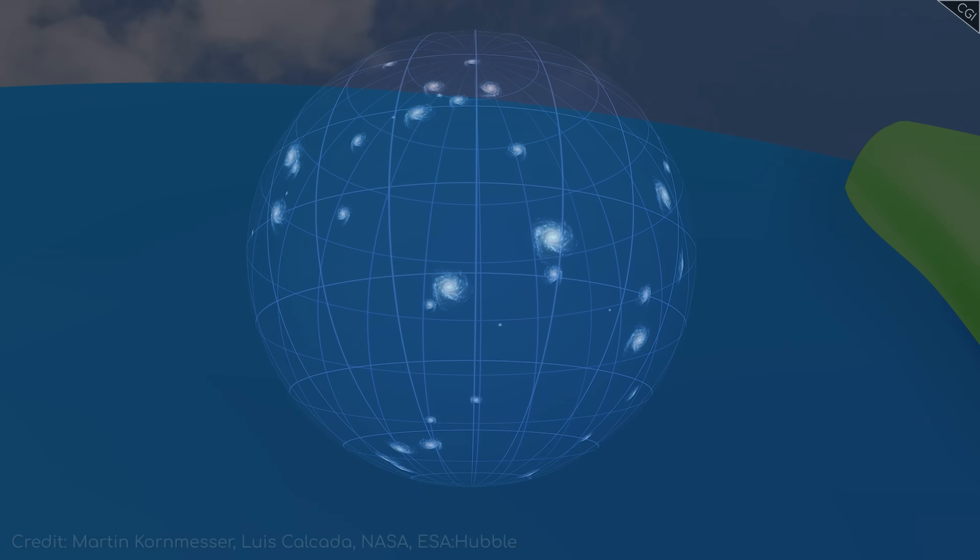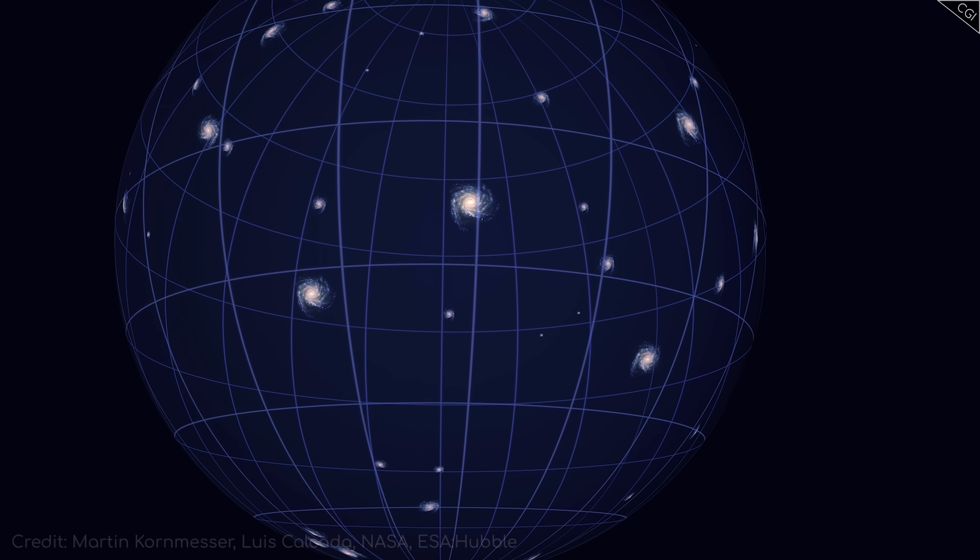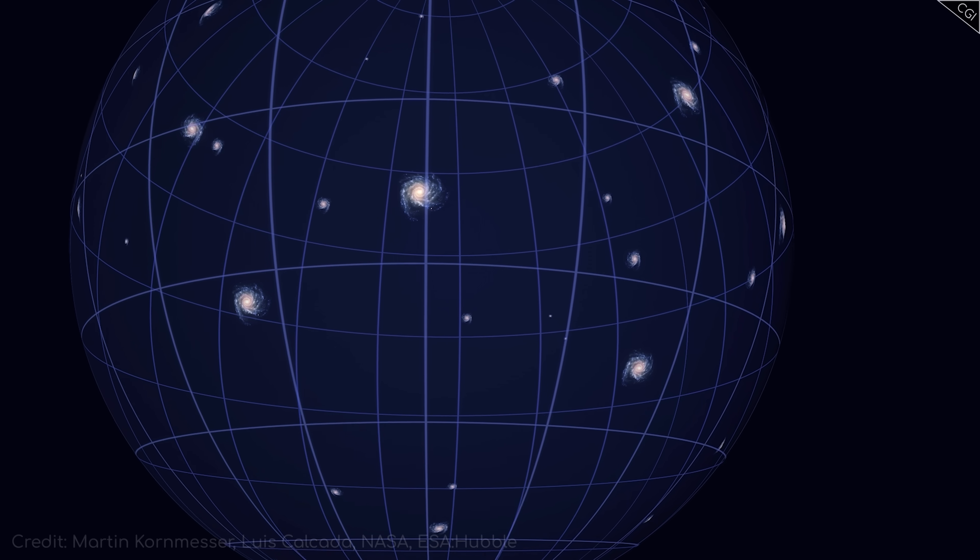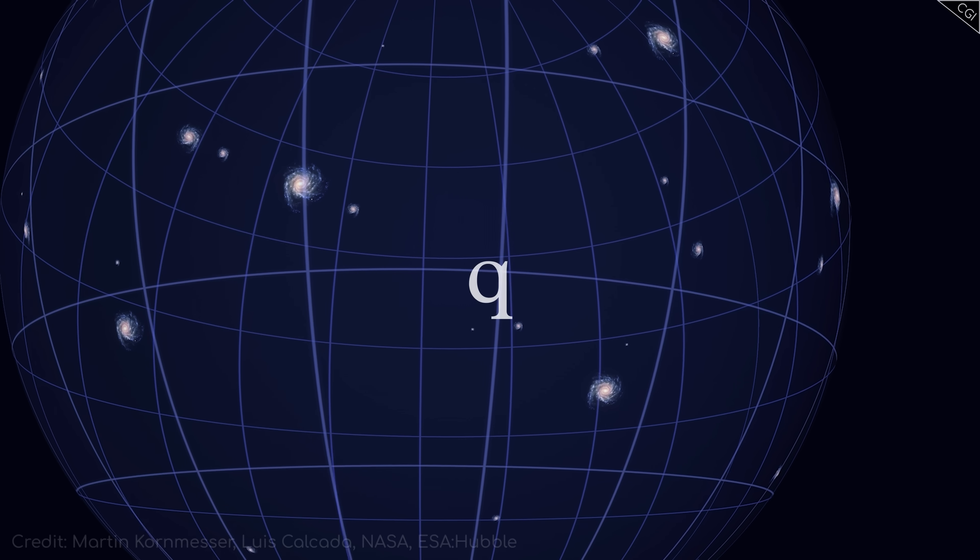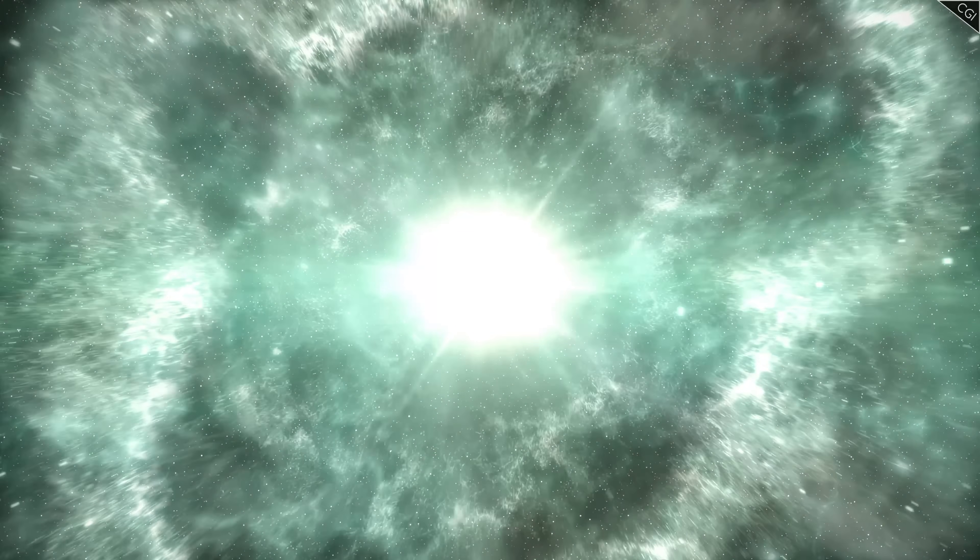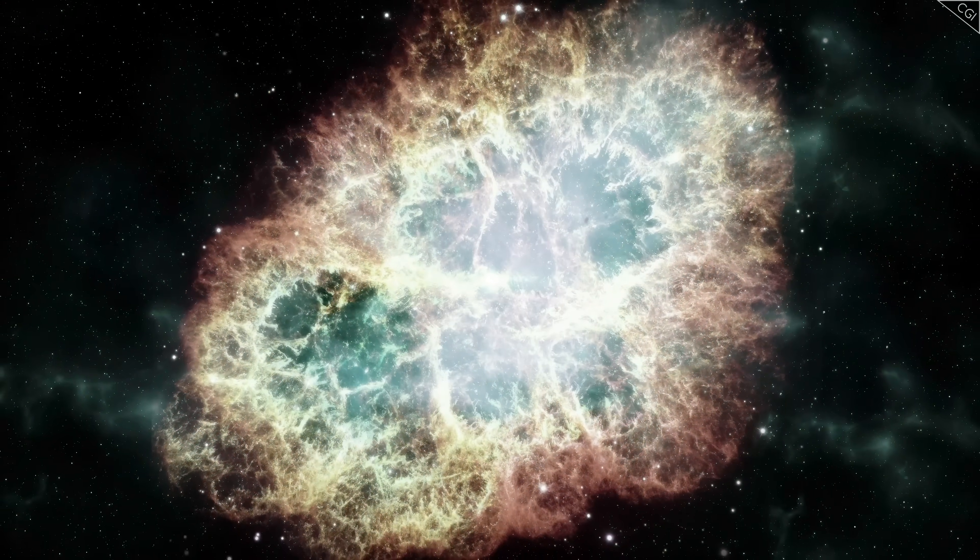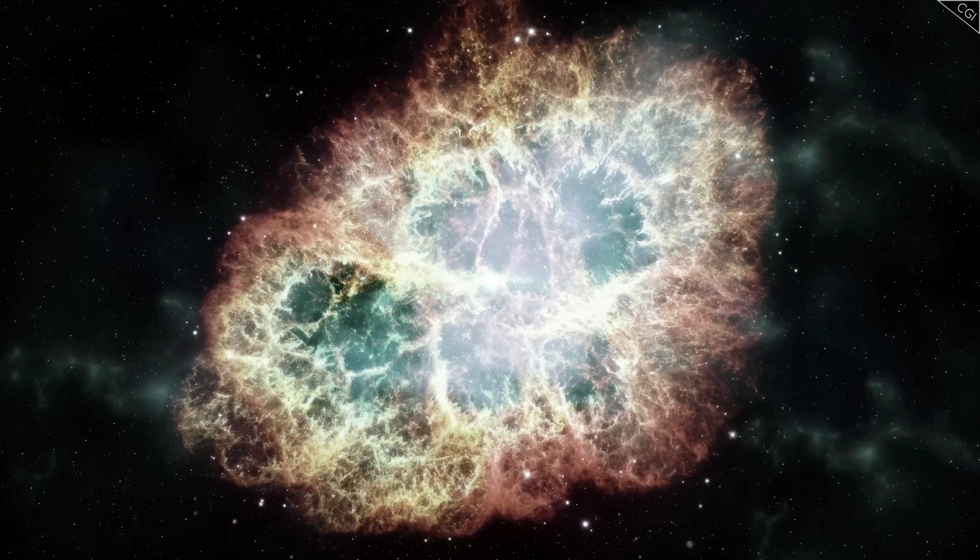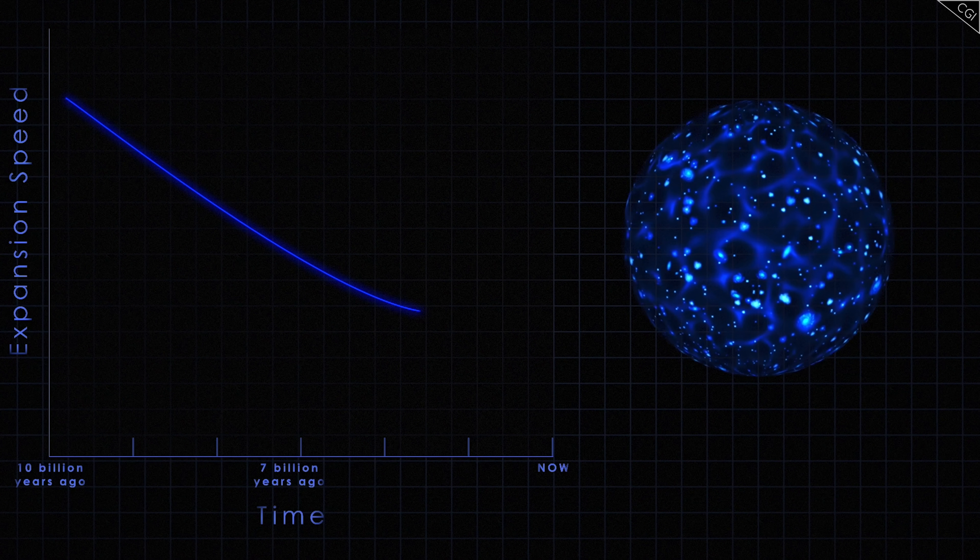That's why, before dark energy was discovered, astronomers assumed our expanding universe was being slowed down by gravity over time. They even came up with a parameter called Q to measure the rate of this deceleration. But at the close of the 20th century, measurements of supernovae revealed that Q was actually a negative number. The universe wasn't decelerating at all. It was accelerating.